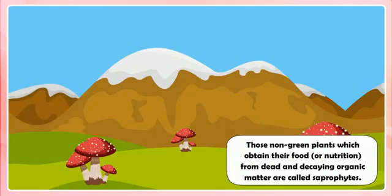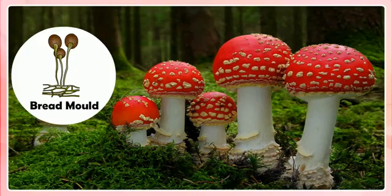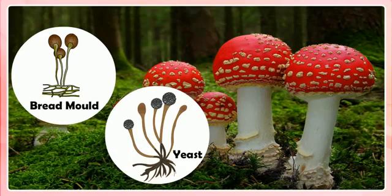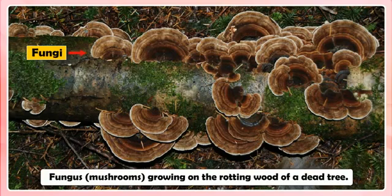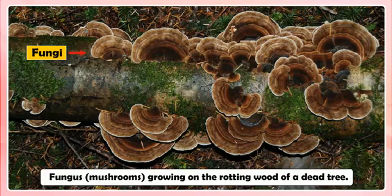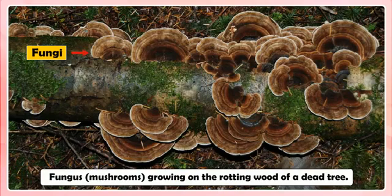Saprophytes. Those non-green plants which obtain their food or nutrition from dead and decaying organic matter are called saprophytes. The fungi such as mushrooms, bread mold and yeast are saprophytes. Saprophytic plants like fungi secrete digestive juices on the dead and decaying organic matter and convert it into a solution, then absorb the nutrients from this solution. This mode of nutrition is called saprophytic nutrition.